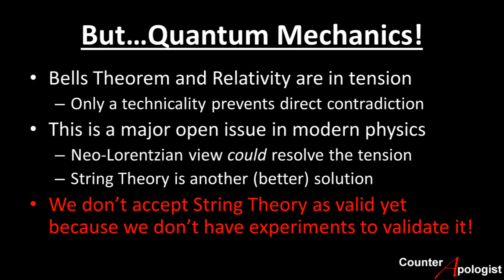In a final-ditch effort to make the Neo-Lorentzian view seem more appealing, Dr. Craig points to the empirically established EPR paradox in quantum mechanics, which highlights a tension between Bell's theorem and Einstein's relativity. This is a real problem in modern physics where a direct contradiction between relativity and quantum mechanics is avoided only by a technicality. Science is actively seeking to truly unify these two well-established theories. Craig argues that adopting the Neo-Lorentzian view would resolve the EPR paradox. However, it is not the only potential solution, and not all solutions require a privileged reference frame. String theory is currently one of the most promising alternatives, which if successful would provide a unified theory of everything — describing particles to cosmos — without the Neo-Lorentzian view's explanatory deficiencies.